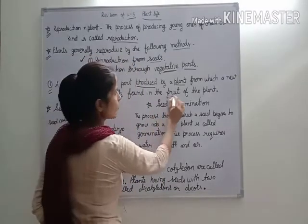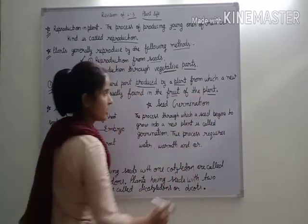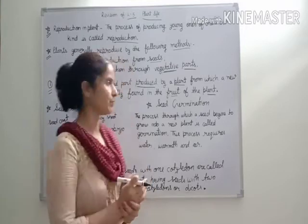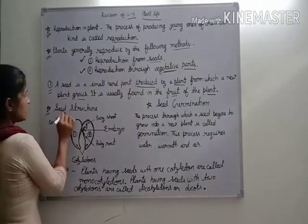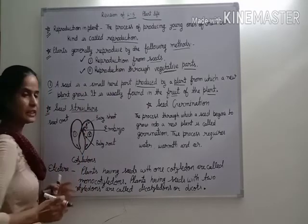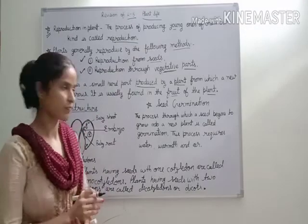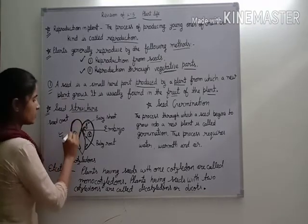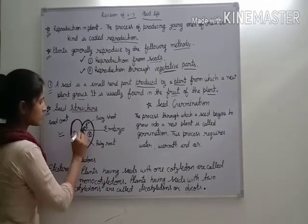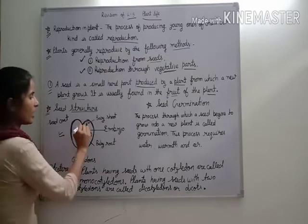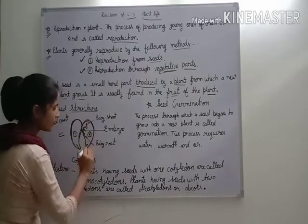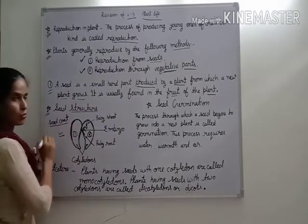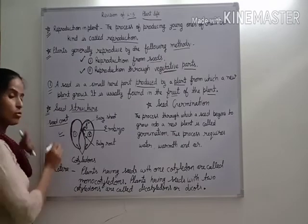It is usually found in the fruit of the plant. Yeh usually plant ka jo fruit hota hai uske andar hi milta hai. Next point is seed structure — seed ki banawat. Look at this picture. This is seed coat — yeh jo bahari outer most covering hai usko bolte hai seed coat.